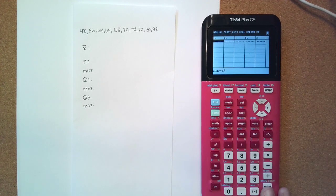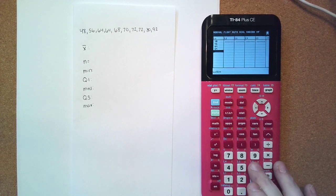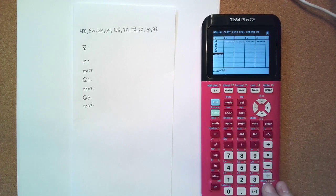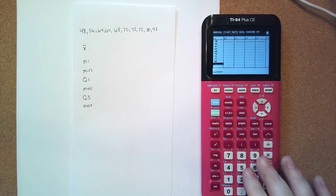We're going to type in 48, enter, 56, enter, 64, enter, 64, enter, 68, 70, 72, 72, 80, and 92.